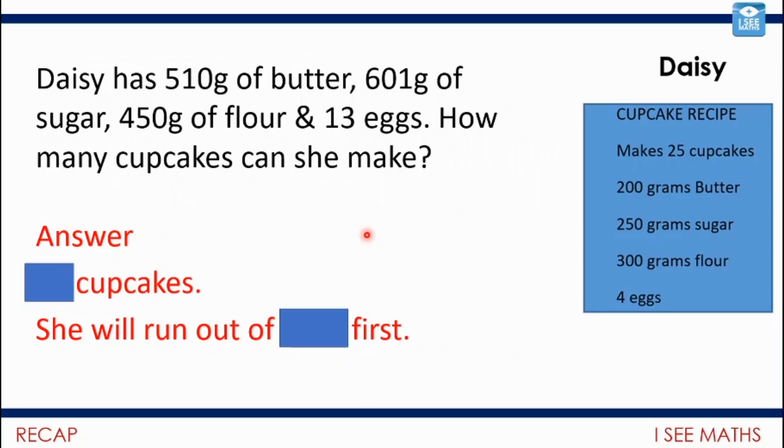Also I have to say this question from Daisy was brilliantly thought out. Daisy went for, Daisy has 510 grams of butter, 601 grams of sugar, 450 grams of flour and 13 eggs. How many cupcakes can she make based on this same recipe? In the answers that Daisy gave she had how many cupcakes and she also included which ingredient we'll run out of first. Now pause the video, which ingredient will we run out of first and how do you know?